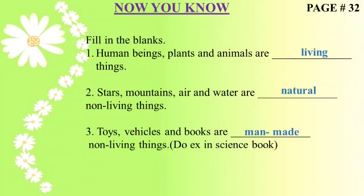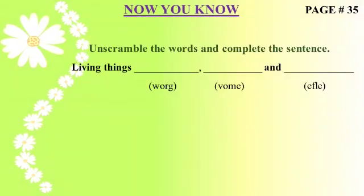Now come to page number 35 — Now You Know. Unscramble the words and complete the sentence. Unscramble the words, solve them, and complete the sentence. Living things grow, move and feel. Do exercise in science book.